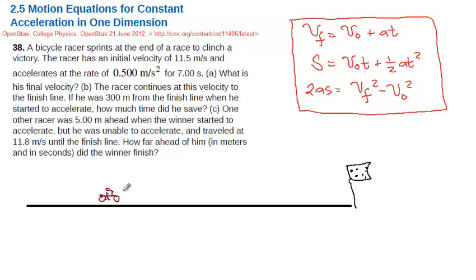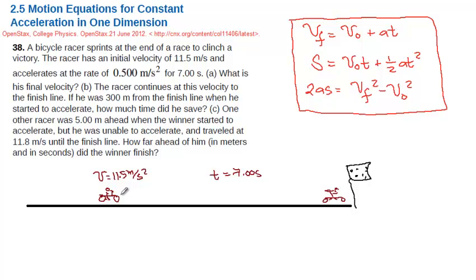Initially, at this point in time, the racer has a speed of 11.5 meters per second and is accelerating. For a time equal to 7 seconds, he's able to reach the finish line. We don't know yet how far this distance is, but we know he started at 11.5 meters per second and took 7 seconds to reach the finish line. The question is: what is his final velocity?